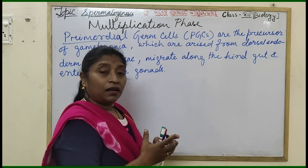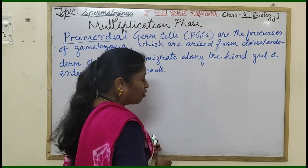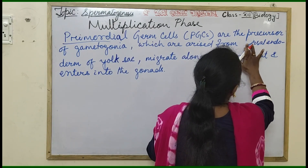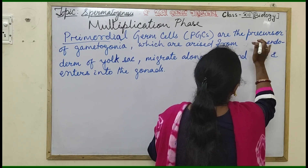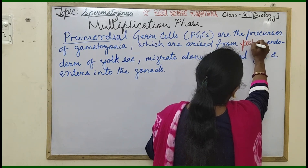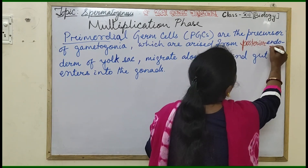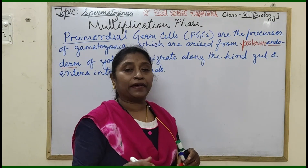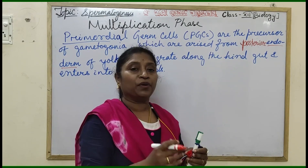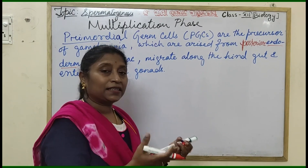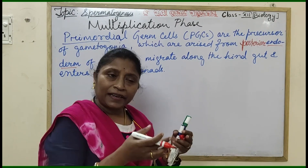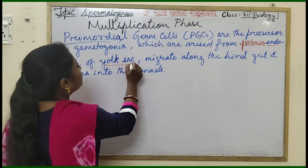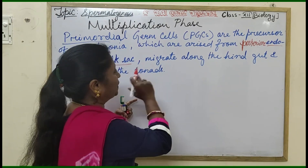PGCs arise from the posterior endoderm of the yolk sac. The yolk sac is an extra-embryonic membrane, a protective layer surrounding the embryo. In human beings, it is vestigial and non-functional, but in early embryonic stages it is somewhat functional. From the endoderm of the yolk sac, the PGCs arise.